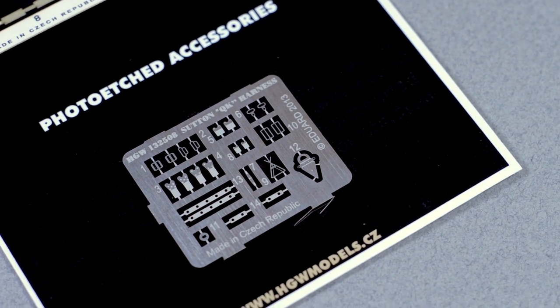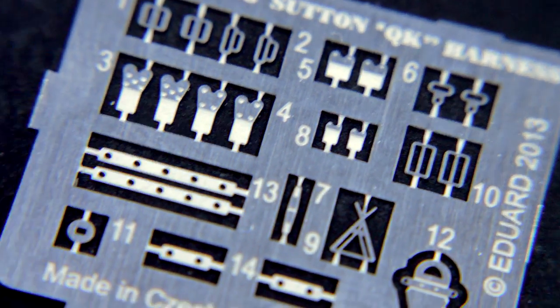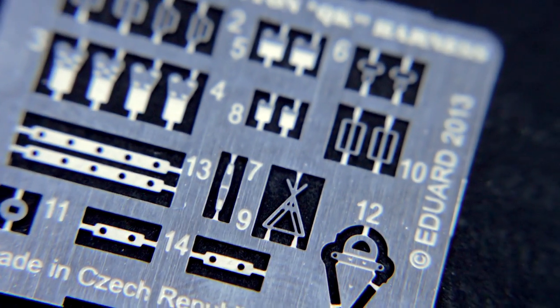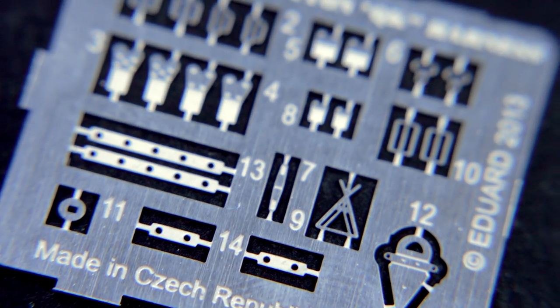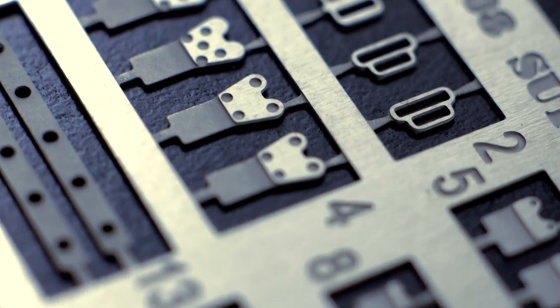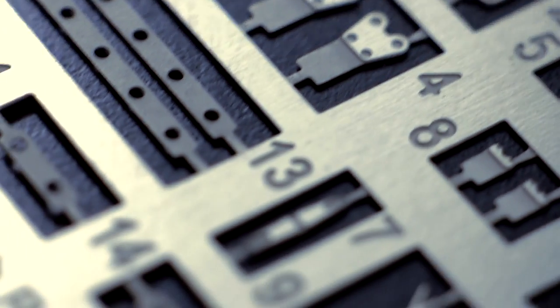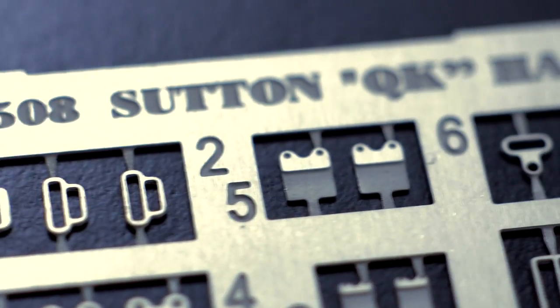The photo etch is of very good quality. It's a standard Edward photo etch, a very small fret that comes with plenty of parts. I think it's enough to build two versions of the seatbelts. The parts are really well engraved, very easy to work with. And overall, it's what you already expect from Edward.